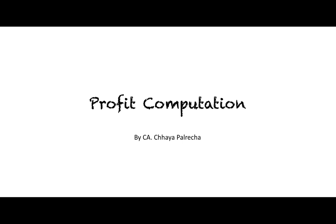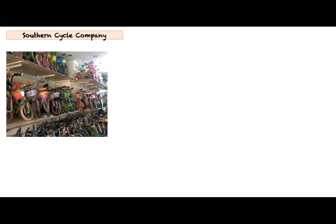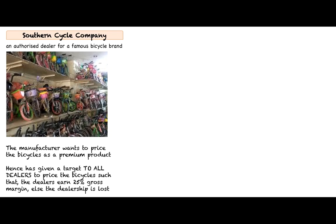Welcome to another interesting session on profit computation. Southern Cycle Company is an authorized dealer of bicycles. The manufacturer wants the price of bicycles to reflect a premium product and has given a target to all its dealers to price bicycles such that the dealers earn 25% gross margin, else the dealership is lost.